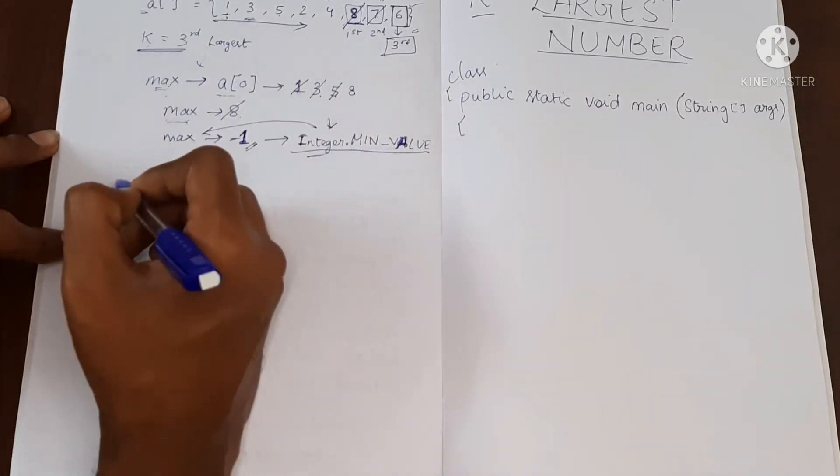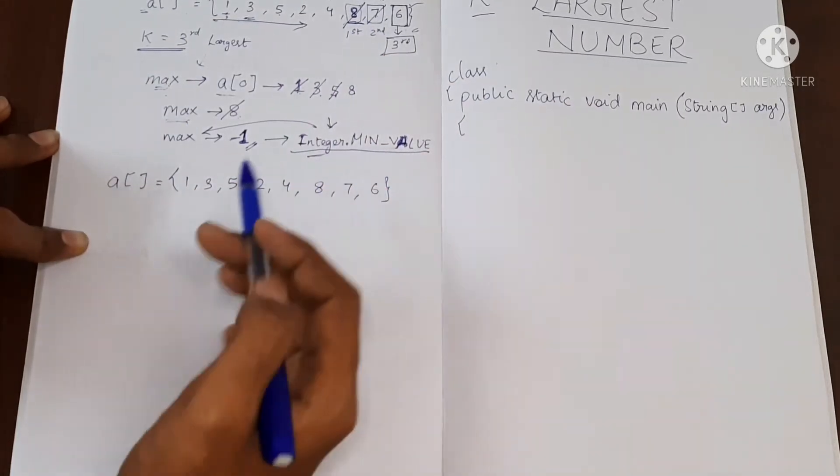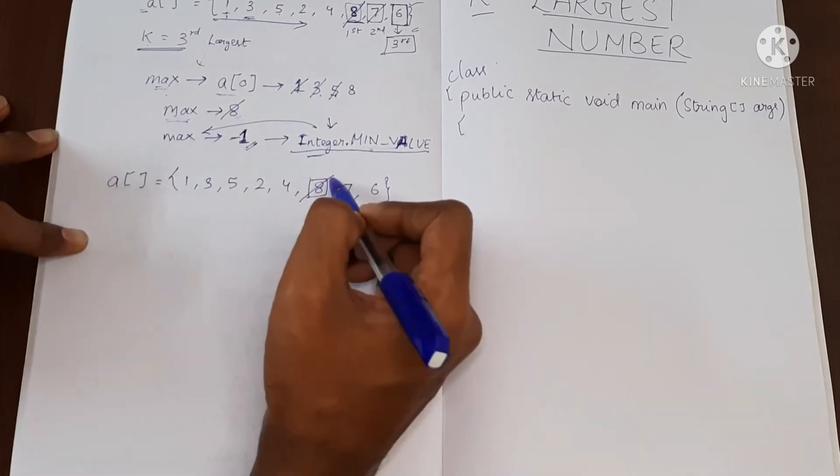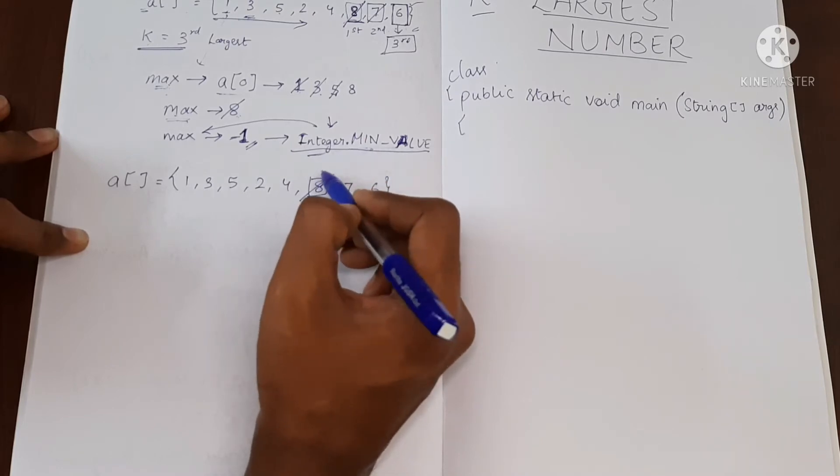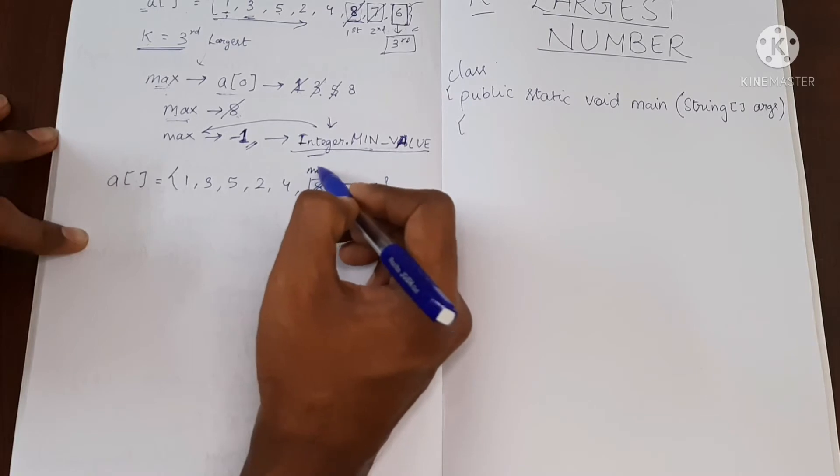So now this 8 has become Integer.MIN_VALUE. Let me just write this array again. So we have found max and made it into a value which is the least in integer. So we have made it into some other value.